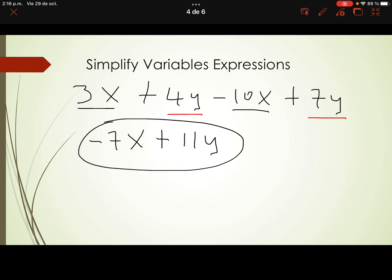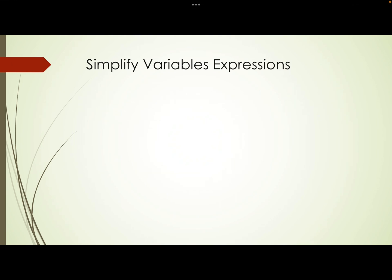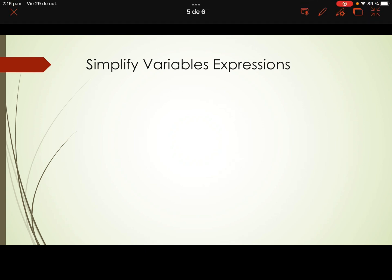Let's analyze a second example. Example number two: simplify the following variable expression — negative 3 times the quantity negative 5a plus 7b.